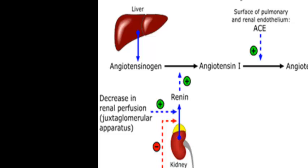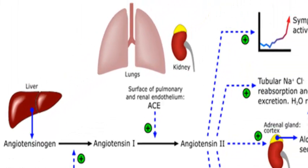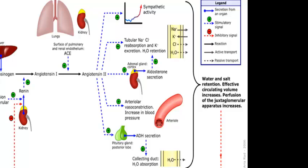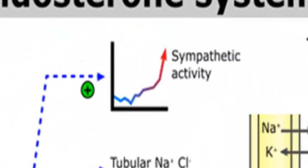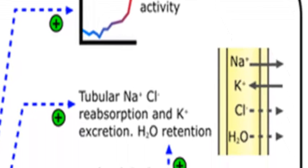Renin then converts angiotensinogen, a protein made in the liver, to angiotensin-1. As angiotensin-1 reaches the pulmonary system, ACE converts angiotensin-1 into angiotensin-2. Here we can see the number of physiological effects that angiotensin-2 elicits. Firstly, it increases sympathetic activity so the heart muscle contracts with more force, leading to higher peripheral resistance. It also increases the reabsorption of sodium and chloride, and excretion of potassium in the kidney tubules.